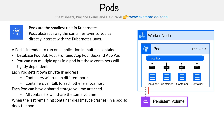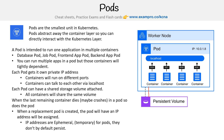When the last remaining container dies or crashes in a pod, so does the pod. But when a replacement pod is created, the pod will have a new IP address assigned. So IP addresses are ephemeral, or temporary, for pods — they don't by default persist. That's why we're going to need Kubernetes services, which we will talk about in this course.